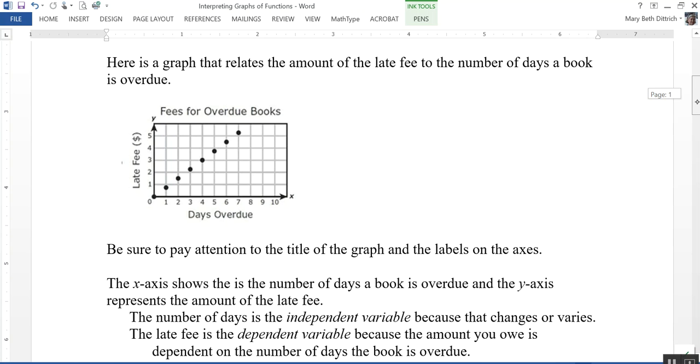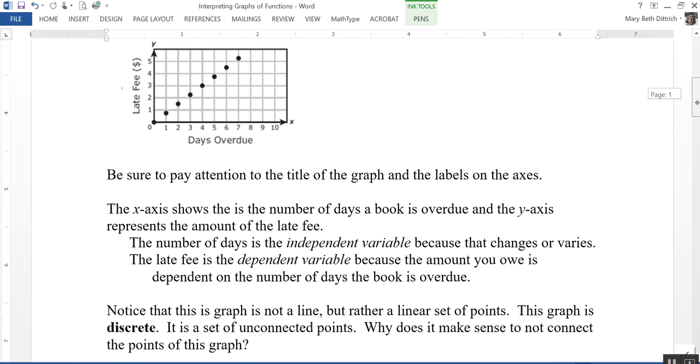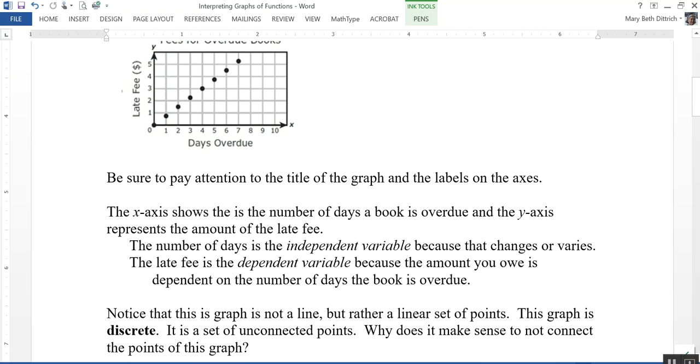One other thing that you'll notice about this graph is that it's not a line, but it's a set of points that kind of lie on a line. The word that we use to describe this kind of graph is the word discrete. It's a set of unconnected points. And this really makes sense here. We don't really want to connect these because there's a certain amount that's due, a certain amount of late fee if the book is one day overdue, and a certain amount if it's two days overdue.